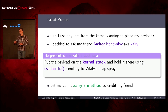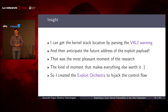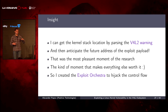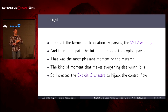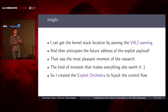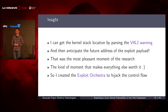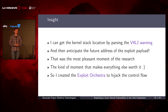I had an insight: I can read the kernel warning, parse it, and extract the RSP register value to understand the location of the kernel stack. Then I can anticipate the future position of the payload in the kernel stack on the next system call — so I have a place with a known address in kernel space where to put my payload. The R11 register starting with 0x8f indicates a location in kernel code, which can be used to bypass kernel address space layout randomization by calculating the randomized offset of the kernel text. That was the most pleasant moment of the research.